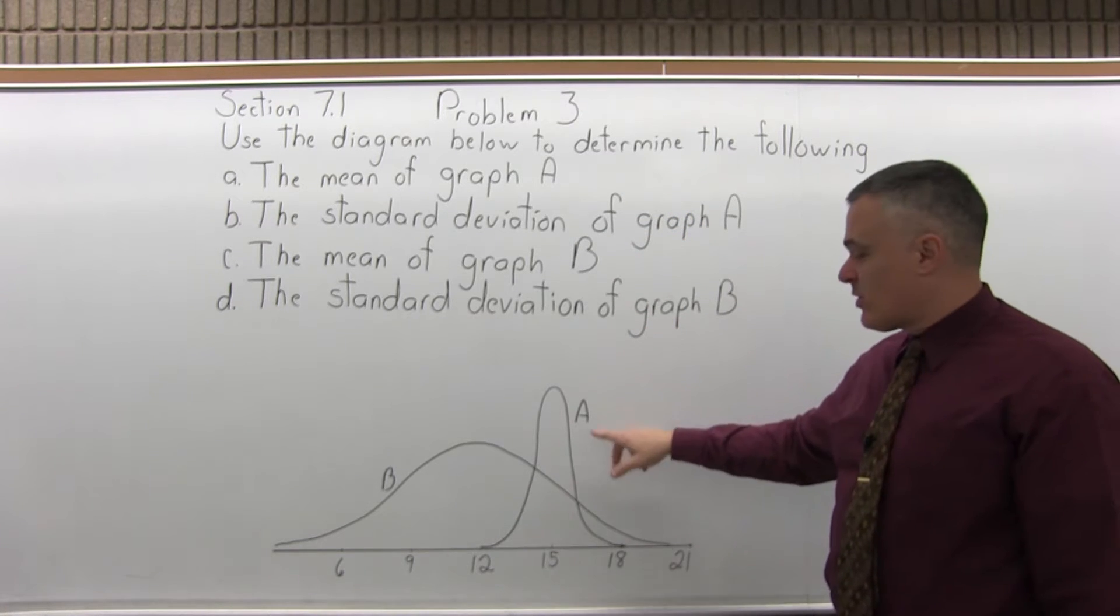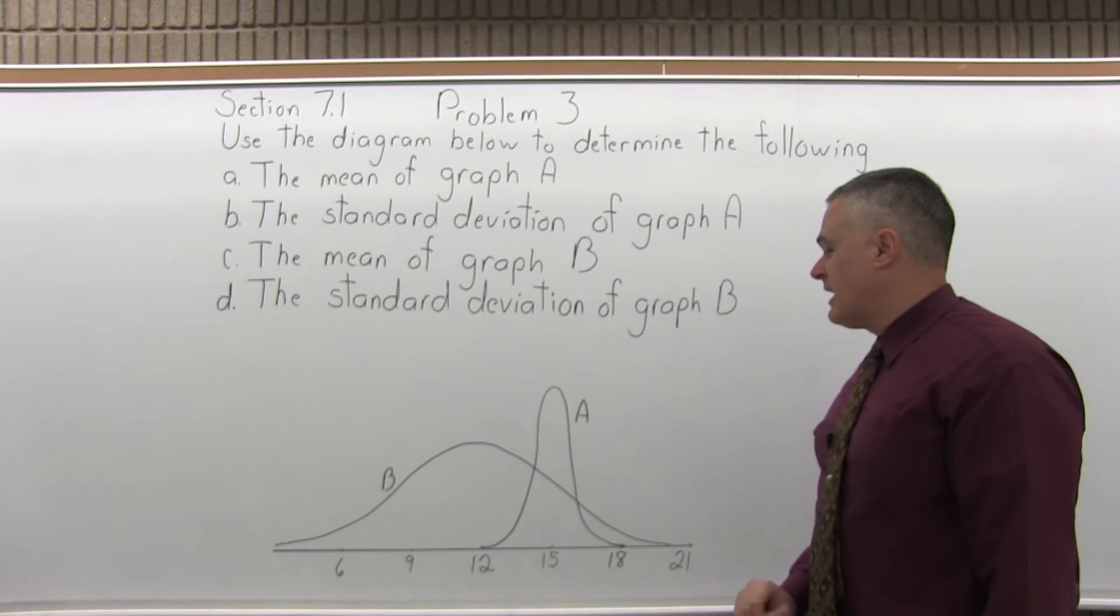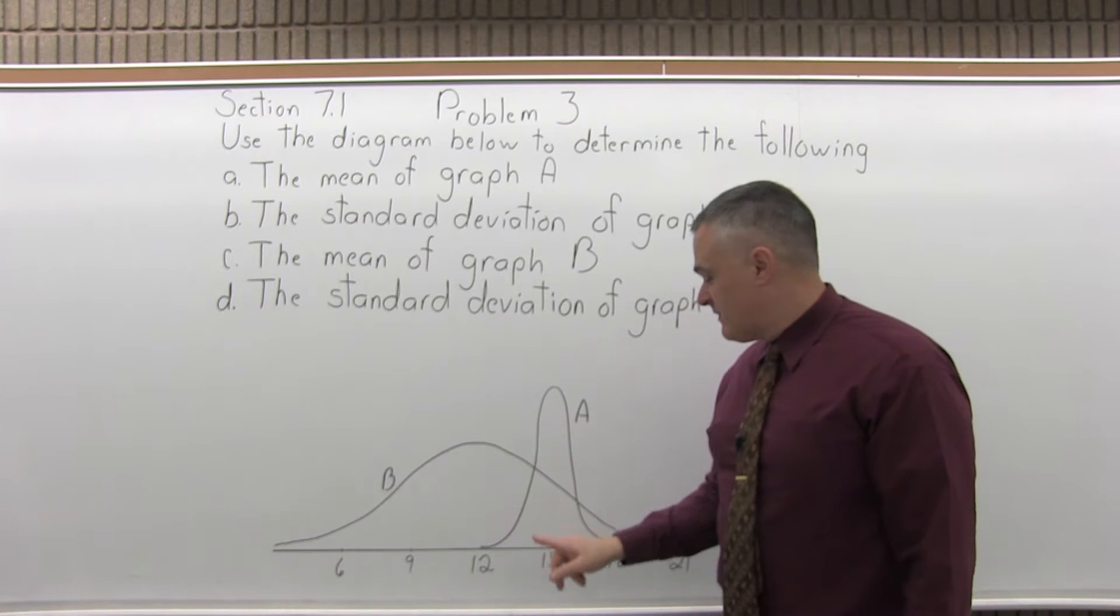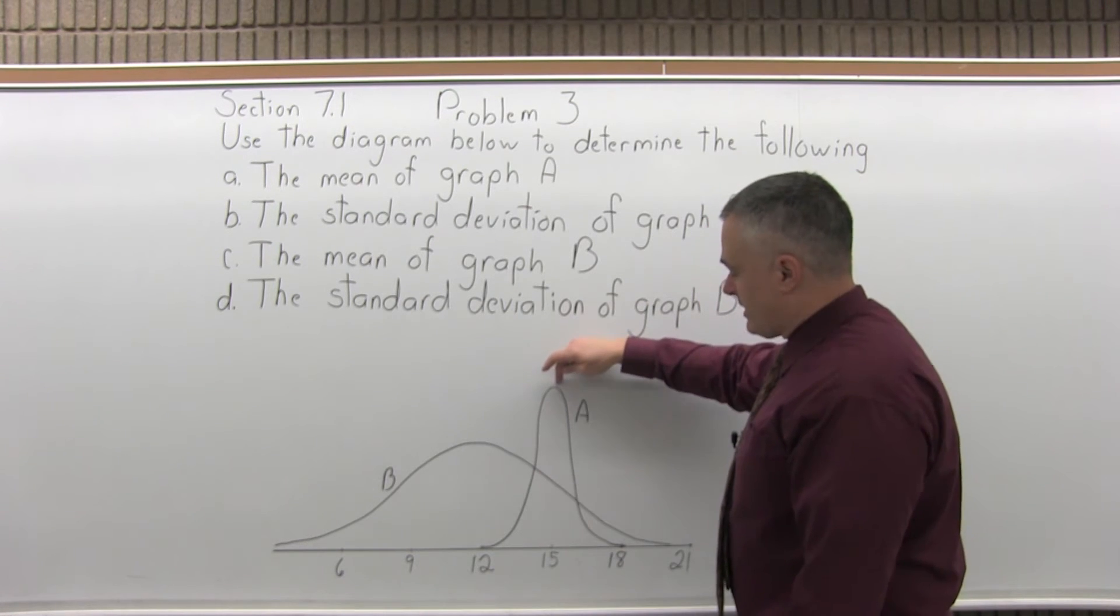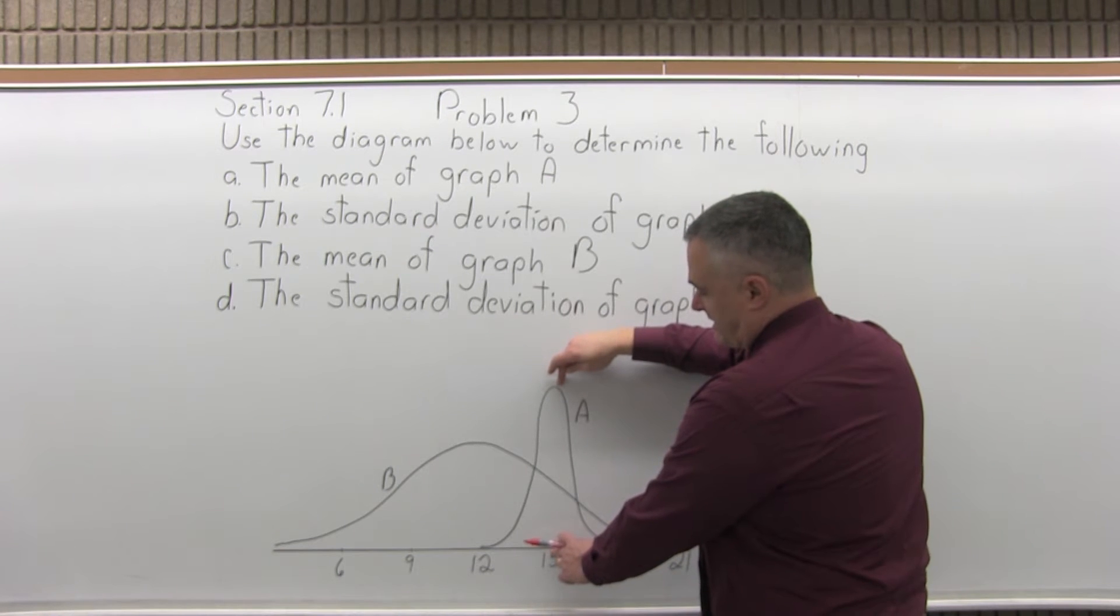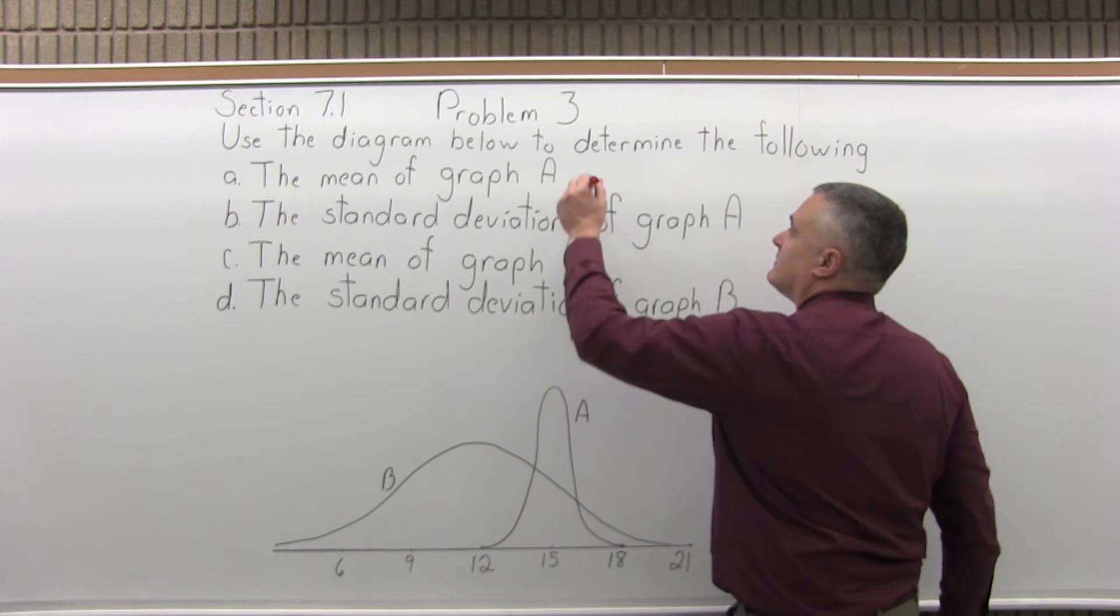So A is the taller, narrower bell curve here, and the mean would be 15, because these graphs are centered over the mean. So over the 15 is the center of the graph, the highest point. So the mean of graph A is 15.